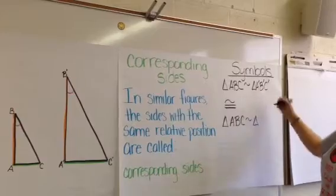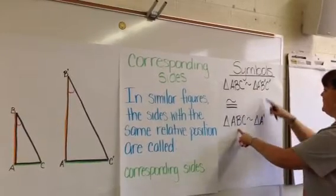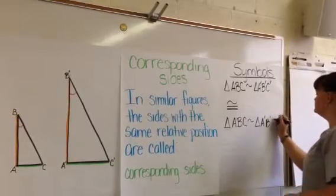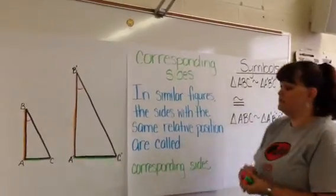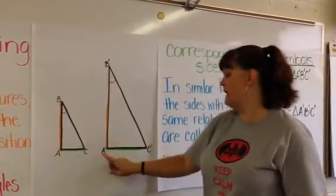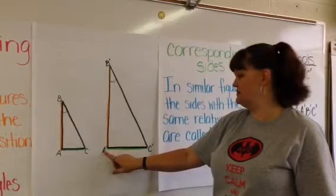So, A corresponds to A', B corresponds to B', and C corresponds to C'. Because in the drawing, the original and the image, you notice that A and A' correspond to each other.